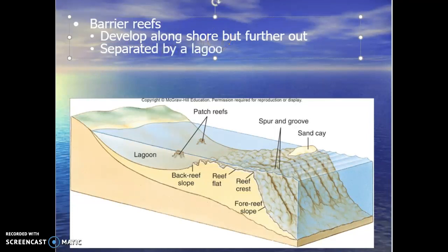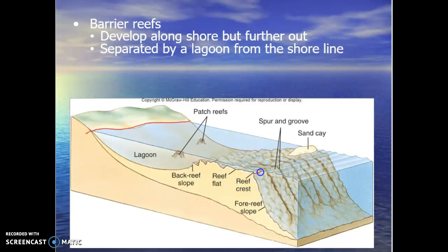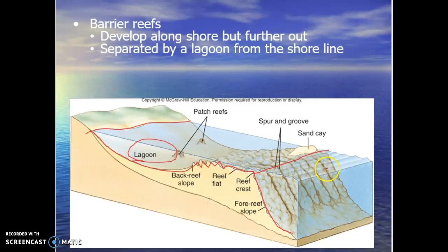Barrier reefs are separated from the shoreline by a lagoon. In between the shoreline and the barrier reef — where you have your reef crest — is this large region known as a lagoon. Notice the bottom goes down deep and then comes back up to form the back reef, reef flat, reef crest, and fore reef slope. Often in barrier reefs you'll see features called spur and groove formations, where sand accumulates in erosion streaks down the face of the fore reef slope.